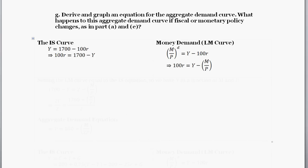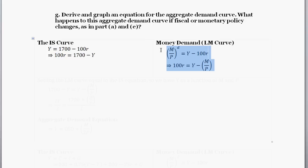So what are our building blocks of the aggregate demand curve? We need our IS curve equation, which is right here, that we found in the earlier part. And then here's our LM curve equation based on the money demand equation right here.